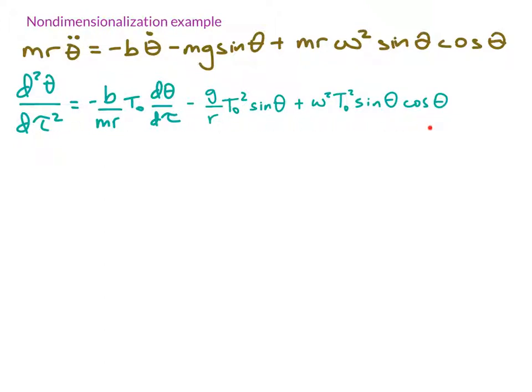That means that I'm now ready to identify my dimensionless groups. By dimensionless group, I mean a group of parameters or constants that, when put together, has no dimension, but where each of the individual contributing parameters actually does have a dimension. I'm seeing three different dimensionless groups.